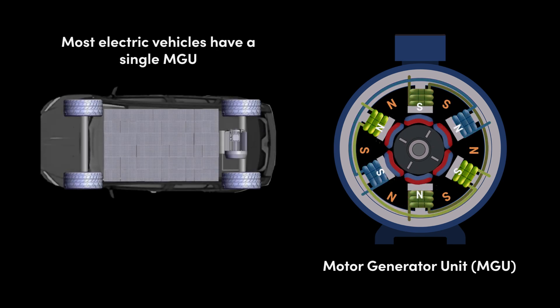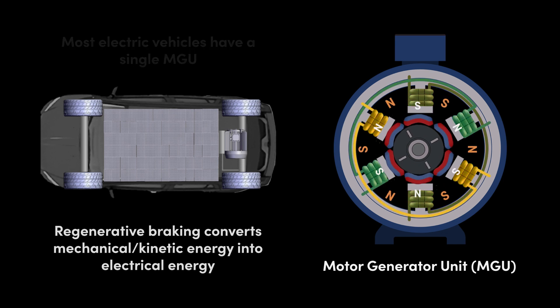Almost any motor can be made to function as a generator and vice versa. This gives rise to what we call Motor Generator Units, or MGUs. Most electric vehicles have a single MGU, which functions as a motor when the vehicle accelerates, and functions as a generator when the vehicle decelerates. This is what we know as regenerative braking, as well as kinetic energy recovery.